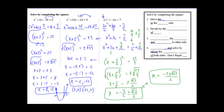Going back to what we just did — the steps: Step 1, move the constant to the other side. Step 2, divide by the coefficient of x squared (if it's already 1, skip this). Step 3, complete the square and add to the other side. Step 4, factor, then take the square root of both sides. Do not forget the plus or minus.